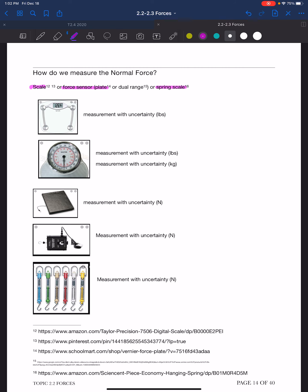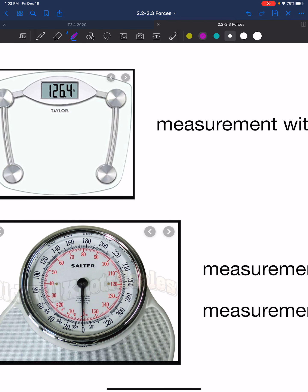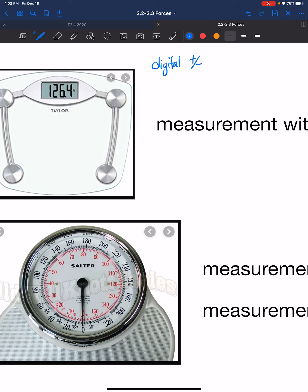With a digital scale showing 126.4 pounds, we do a quick uncertainty exercise. Since it's a digital scale, the uncertainty is plus or minus 0.1 pounds — the last decimal place could go up or down one increment. So we would say the weight is 126.4 plus or minus 0.1 pounds.